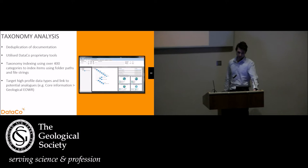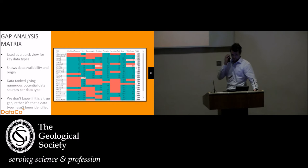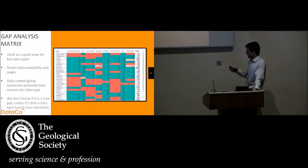In order to do this, we started out by deduplicating the documents. Obviously reworking information and using the same source of information twice is, we've seen numerous times up to 20-25% of information within a file system is duplicated time and time again, so deduplicating that first was paramount. Then we utilize our proprietary tool set, which basically uses taxonomies of over 400 categories to look at the information, understand that, and then index it. So we can target high profile data types and link those to potential analogues, such as you might find core information in an end of well report, a geological end of well report.